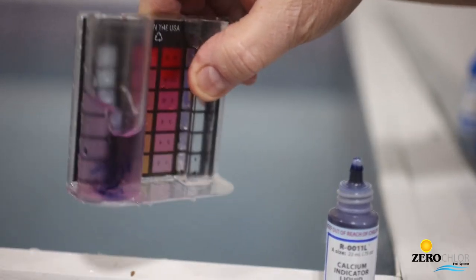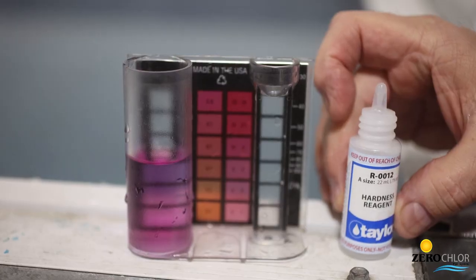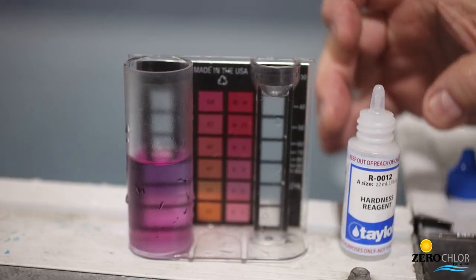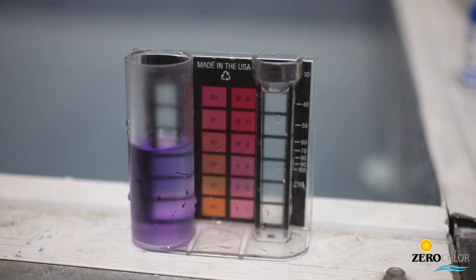If calcium is present, the sample will turn red. Add R-0012 hardness reagent. Count each drop and swirl after adding. When the color changes to blue, multiply the amount of drops added by 10. This will give you your calcium hardness result.